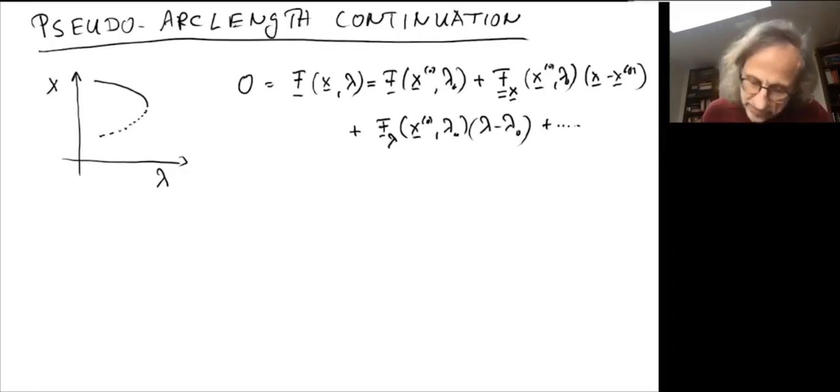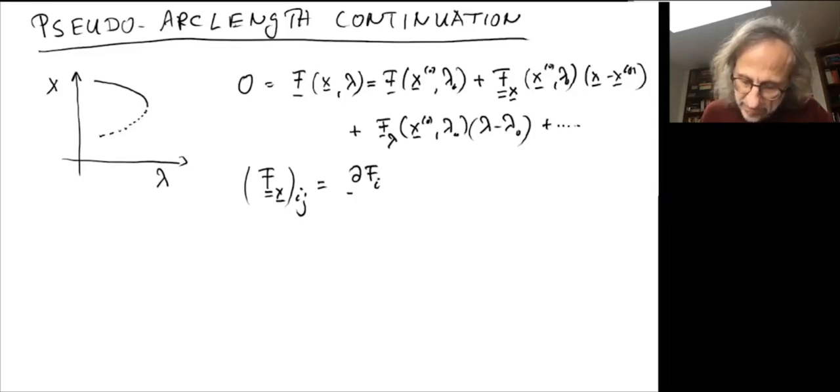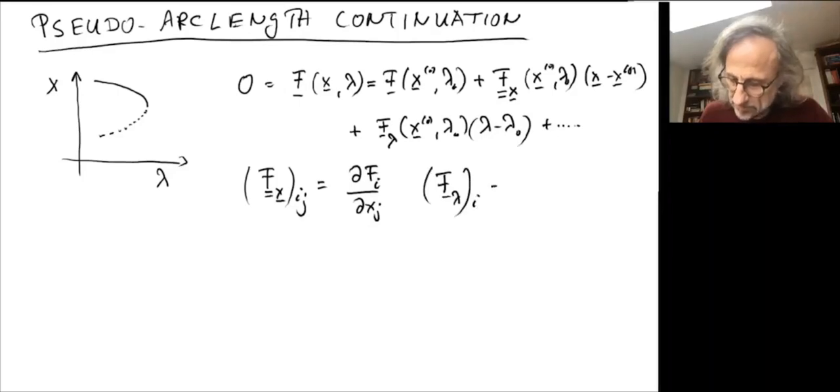In terms of notation, to make clear: f_x, its ij component is df_i/dx_j, so that's a matrix, whereas f_lambda is a vector, and that's simply df_i/d_lambda.